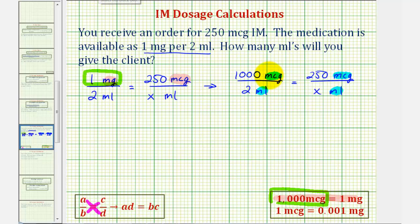We'll have 1,000 times X, that's 1,000X, equals two times 250, that's 500. Dividing both sides by 1,000, we have X equals one-half or 0.5.